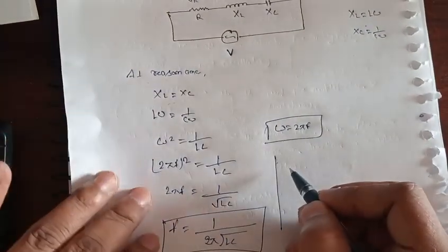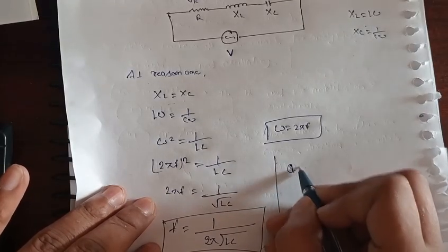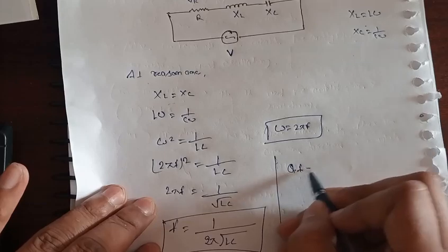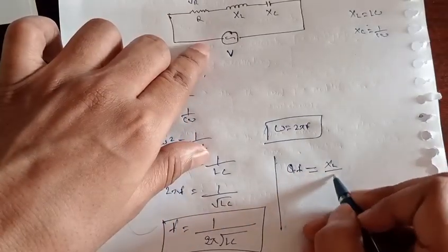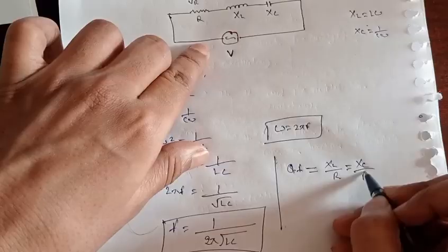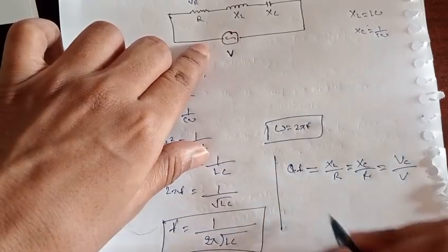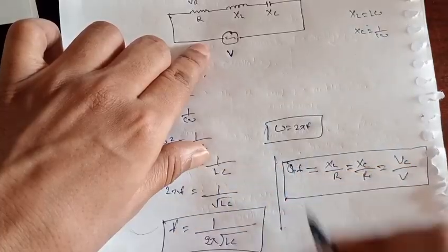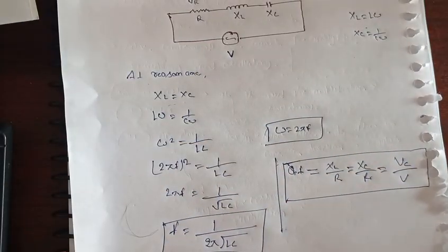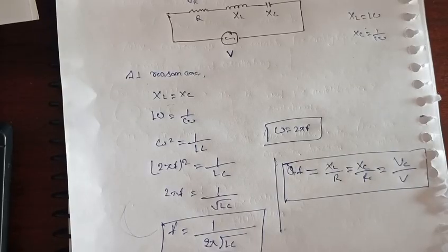We will see the formula of quality factor. Quality factor is basically denoted by QF. QF is equal to XL by R, which is equal to Xc by R, which is equal to Vc divided by V. This is the formula of the quality factor. Q-meter works on the principle of series resonance.